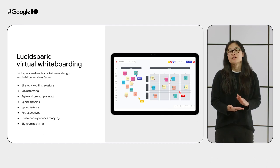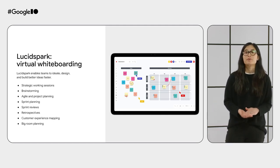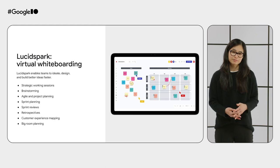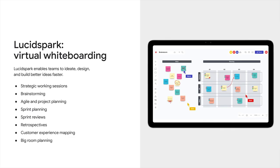Lucid focused on its whiteboarding product, Lucid Spark, for building the add-on with us. Lucid Spark is a virtual whiteboarding product designed to enable teams to ideate, design, and build better ideas faster. It enables key activities such as strategic planning, brainstorming, sprint planning or reviews, and even retrospectives. Basically, anytime you need to visualize ideas and work through something big or small together, Lucid Spark is there for you.